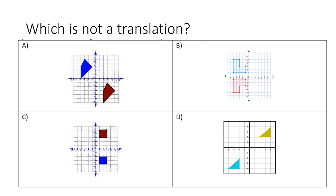Here's another one — try to tell me which one is not a translation. Hopefully you chose B is not the translation, because each point was not moved along the same line.